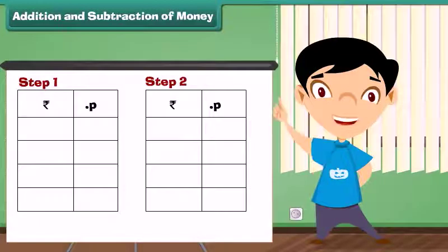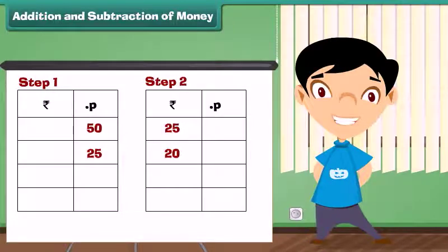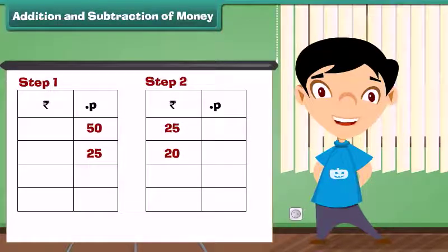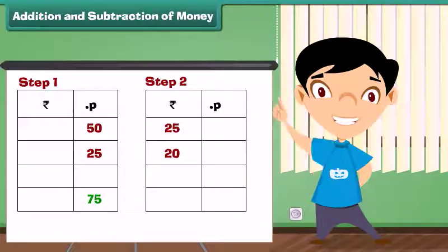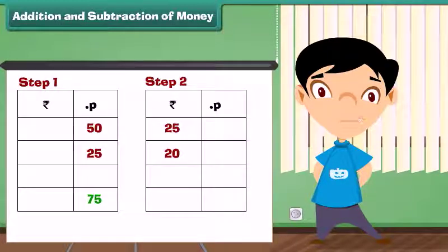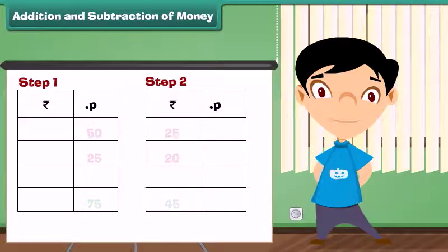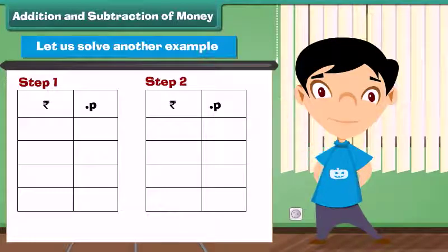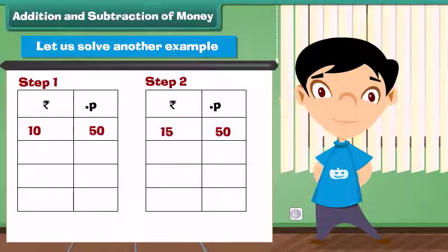Let us learn how to add 25 rupees 50 paise and 20 rupees 25 paise. Step 1: Add the numbers in the paise column — 50 plus 25 equals 75 paise. Write 75 under the paise column. Step 2: Add the numbers in the rupees column — 25 plus 20 equals 45 rupees. Write 45 under the rupees column.